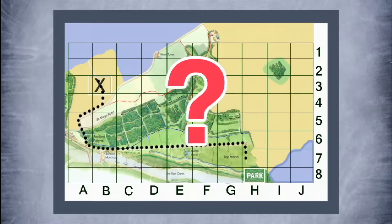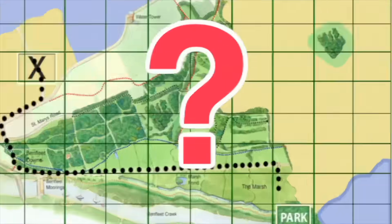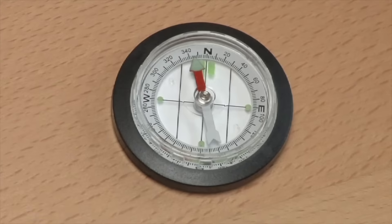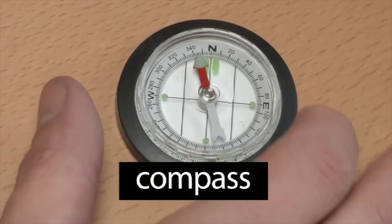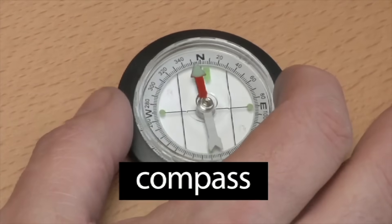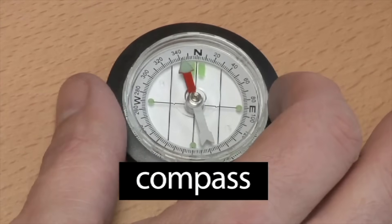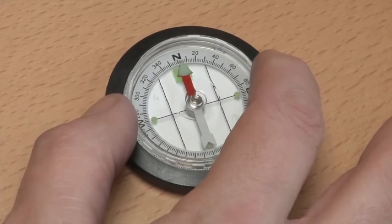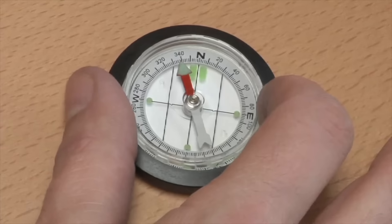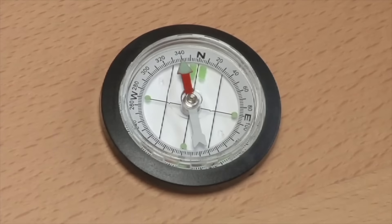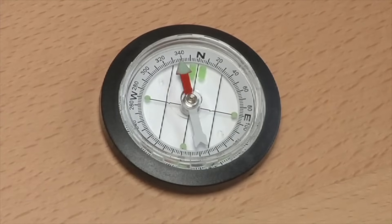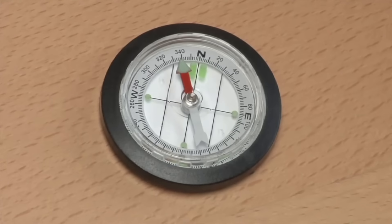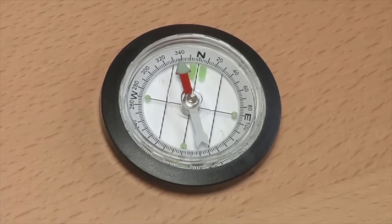So how do we know which way to go? We use another tool — a compass. A compass has a magnetic needle that is naturally pulled to point towards the Earth's magnetic north pole. This means that the needle always points north.